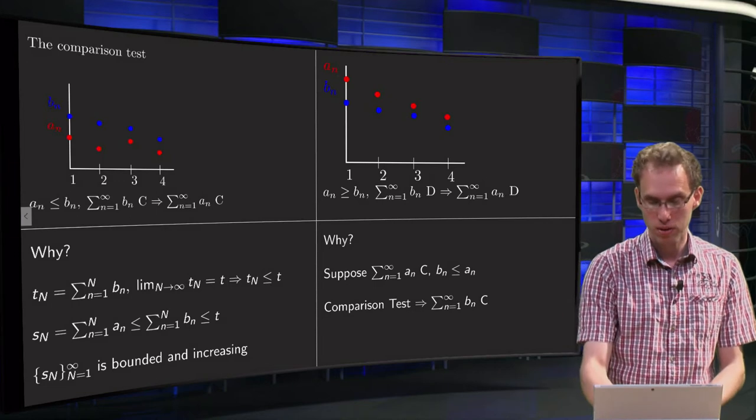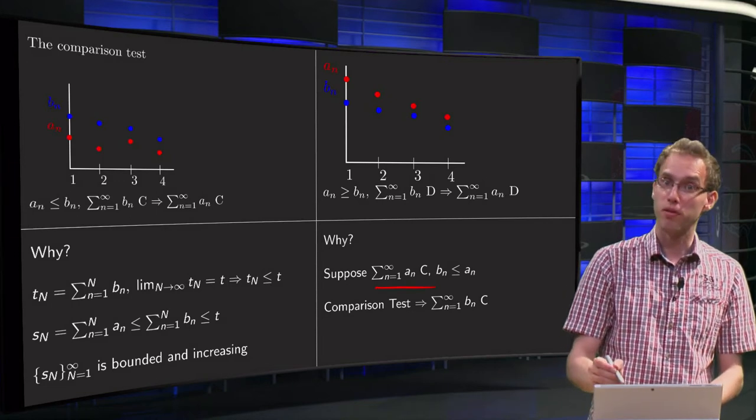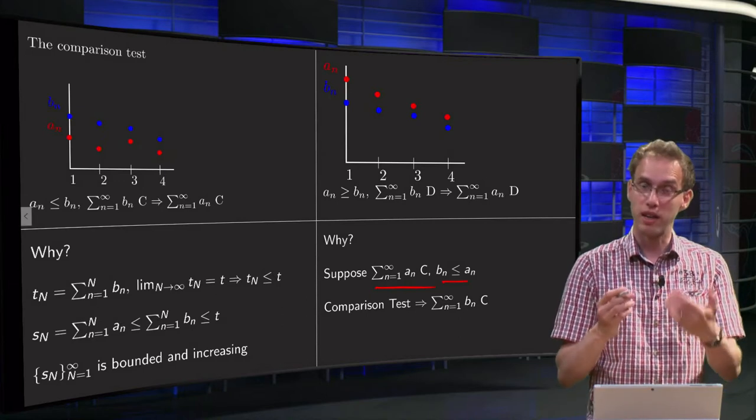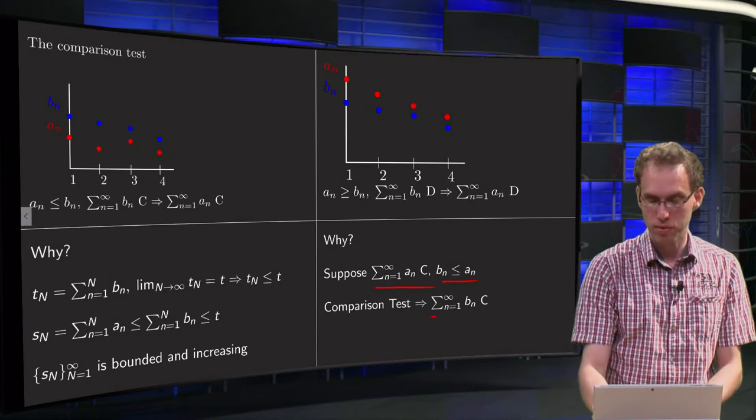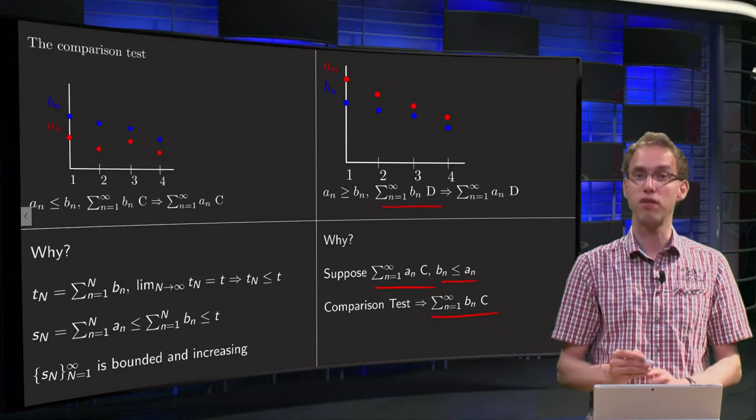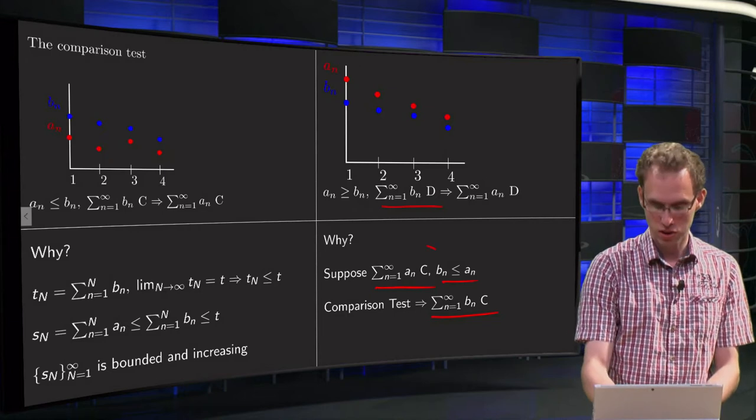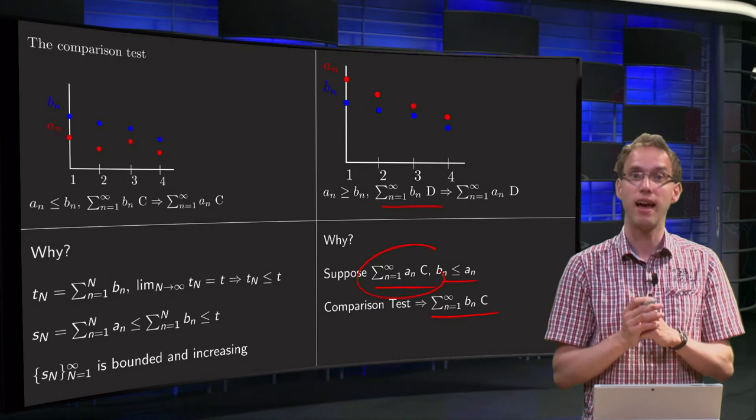Well, suppose to the contrary it would be convergent. Then the sum of the An is above the Bn and the sum of the An is convergent, so due to the comparison test we just have proven, that would mean that the sum of the Bn would be convergent, which is not true because our assumption is that it diverges. Hence our assumption is wrong, so that means that this assumption over here is wrong, and we can conclude that the sum of the An diverges.